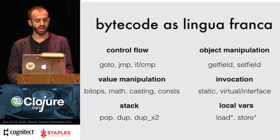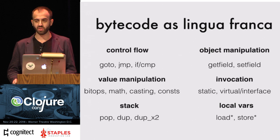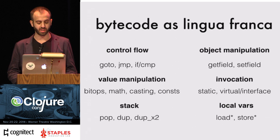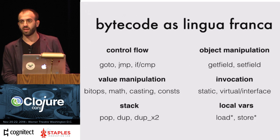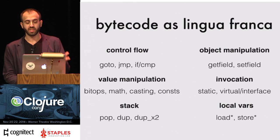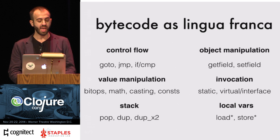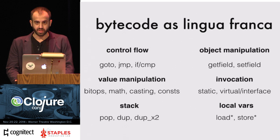Most of the 200 bytecode instructions are grouped into a few categories. We have control flow — jumping from one set of instructions to another, comparisons, goto. We have basic things that get things in and out of objects, value manipulations, math, casting, bit operations, shifting, and constants. There are a handful of ways to invoke things on the JVM: static method calls, virtual and interface calls on objects, and constructors. Two important categories are stack manipulation, since the JVM is a stack machine, and local variable manipulations.